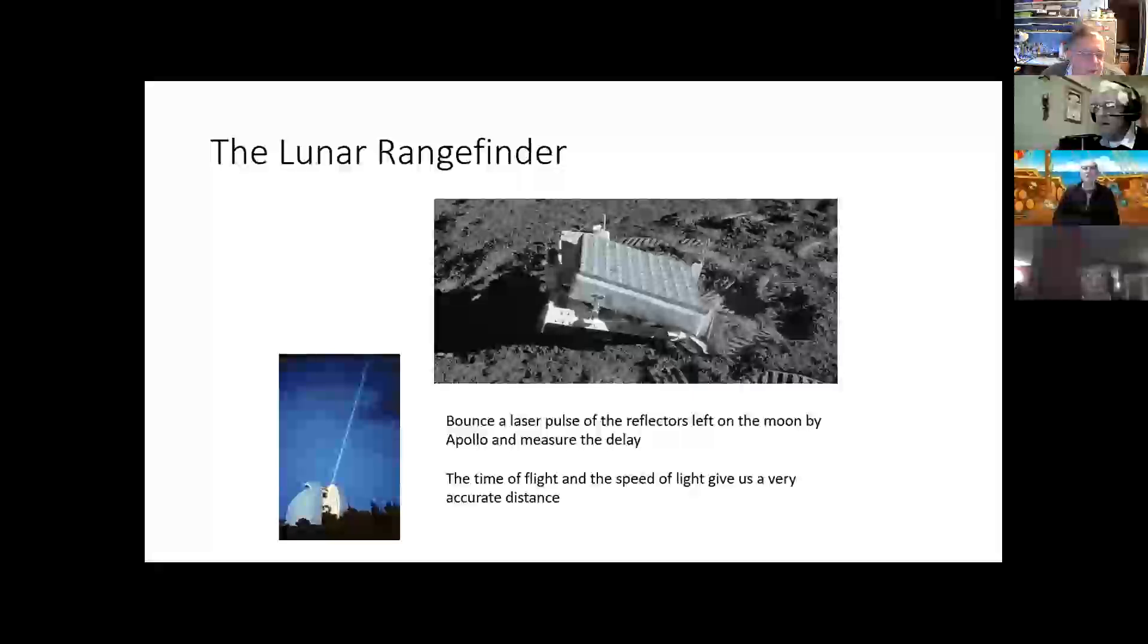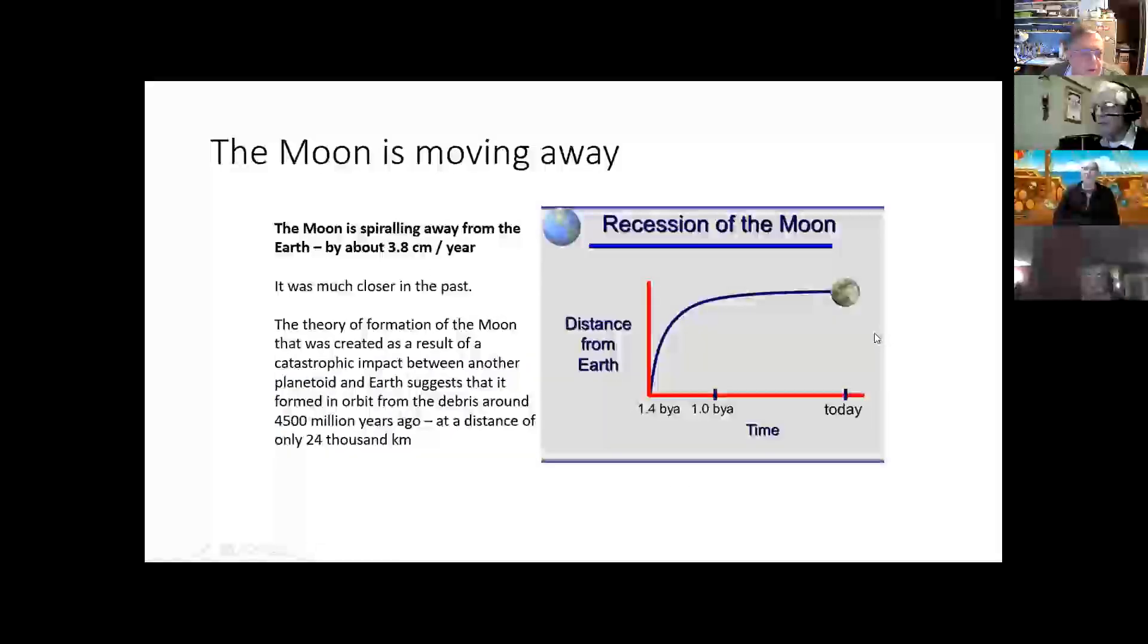Of course, we can also measure the same lunar distance by bouncing laser beams off these reflectors that have been sent to the Moon and get much more accurate measurements. And that tells us that the Moon is moving away from us. That's moving away by 3.8 centimeters every year, all due to the effect of the tides.